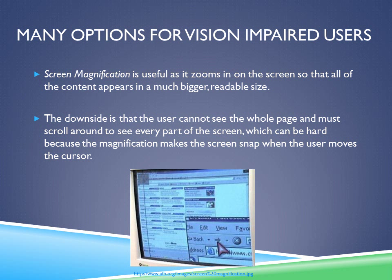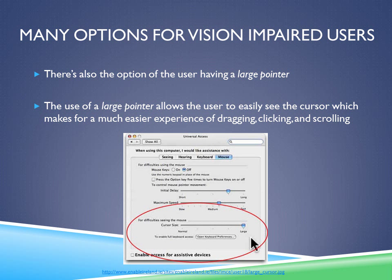As you can see in the picture, it shows on the bottom right a screen magnification which makes everything much easier and readable to see, while the left side shows the overall webpage, which may be very hard for people that can't see very well. There's also the option of having a large pointer. The use of a large pointer allows the user to easily see the cursor, which makes for a much easier experience of dragging, clicking, and scrolling.